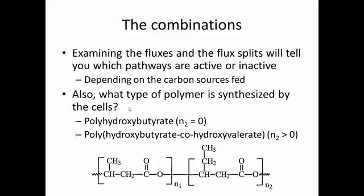Also, what type of polymer is synthesized by the cells? So there's either polyhydroxybutyrate, which is a traditional homopolymer that's synthesized by Ralstonia eutrophia cells. So we have our N1 and N2 monomers. This is hydroxybutyrate. This is hydroxyvalerate. The N2 concentration would be zero if it's polyhydroxybutyrate. And if it's the copolymer, polyhydroxybutyrate, cohydroxyvalerate, the N2 concentration is going to be greater than zero.